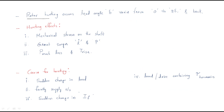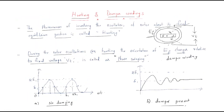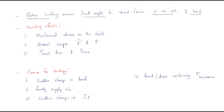During rotor hunting, the load angle δ varies from 0 to 2δ1 and back. In the hunting process it varies from 0 to δ1, reaches 2δ1, and then comes back to 0.